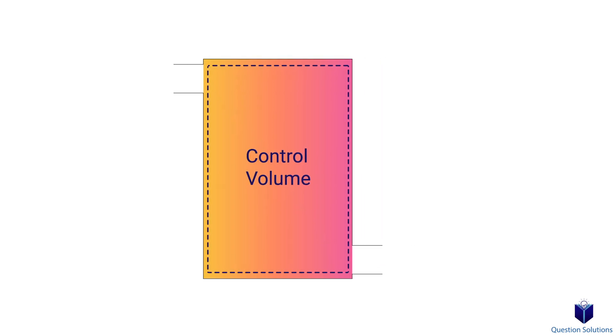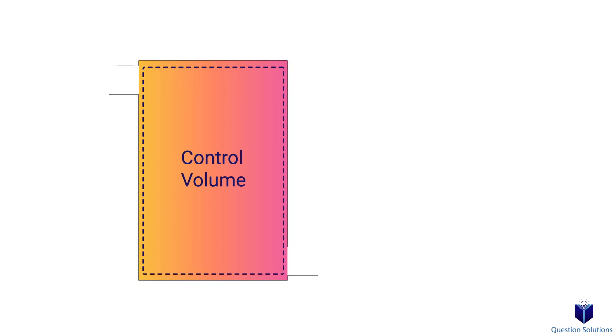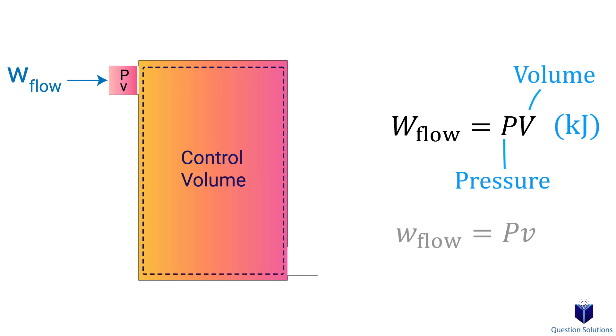This work is called flow work or flow energy. In simple terms, it's the energy required to push a fluid into or out of a control volume. When a fluid is at rest, it doesn't possess any flow energy. Flow work can be found by multiplying pressure by the volume, and if we want to write it per unit mass, it would be Pv with units of kilojoules per kilogram.